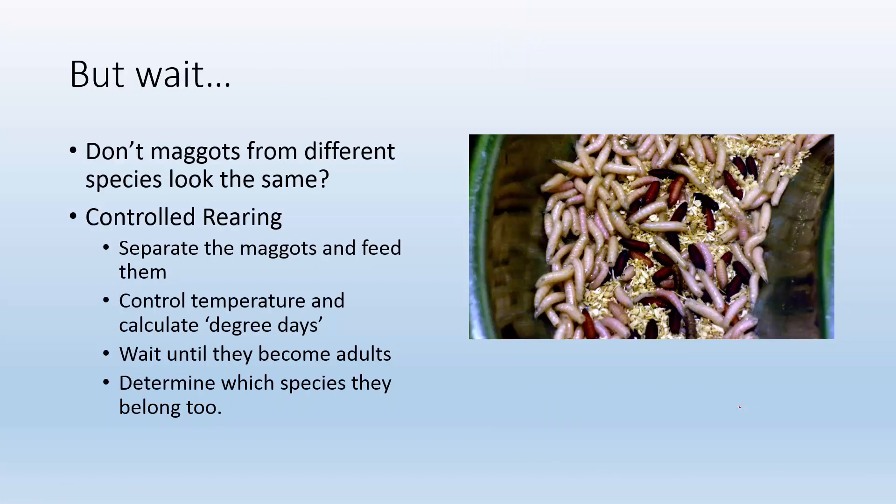But wait, don't maggots from different species all look the same? How are we going to know what species of maggot we got? Well probably the most straightforward way to figure that out is what we call controlled rearing, and it's basically just collect some maggots from the body, the crime scene, and we're going to separate them, we're going to feed them so that they can continue growing. We measure them first so we know how big they were when we collected them and then we control the temperatures.